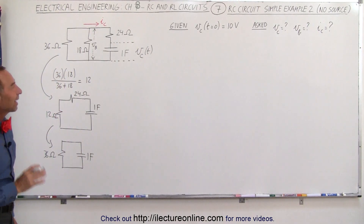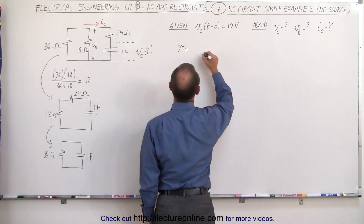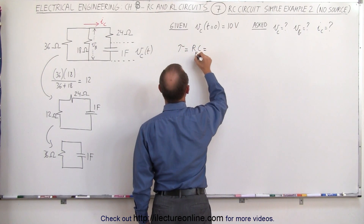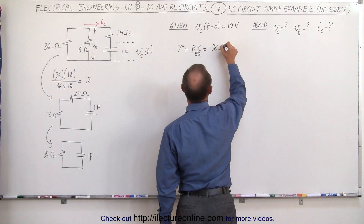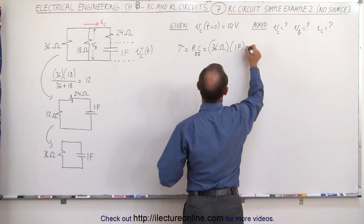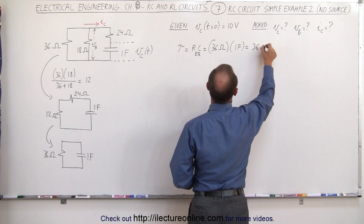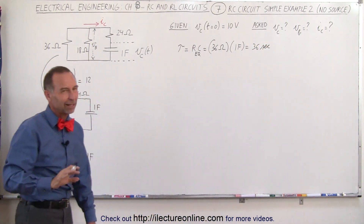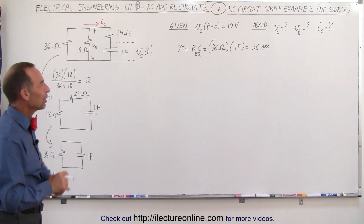We can now find the time constant. Tau is equal to R times C — the equivalent resistance times the capacitance — which gives us 36 ohms times 1 farad, equal to 36 seconds. That's a very long time constant, typically not found in most circuits, but this is just a good example.